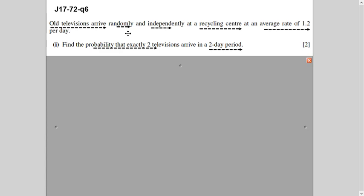These two factors — randomly and independently — are basically conditions. For every distribution, there are certain conditions which must be met. At times the examiner says 'state the assumption' or 'state the condition.' So randomly, independently, and there are more conditions also. Old televisions arrive randomly and independently at a recycling center at a rate of 1.2 per day. So that is your lambda per day.